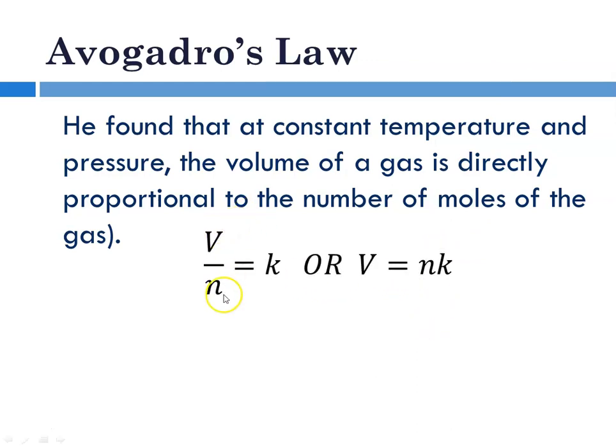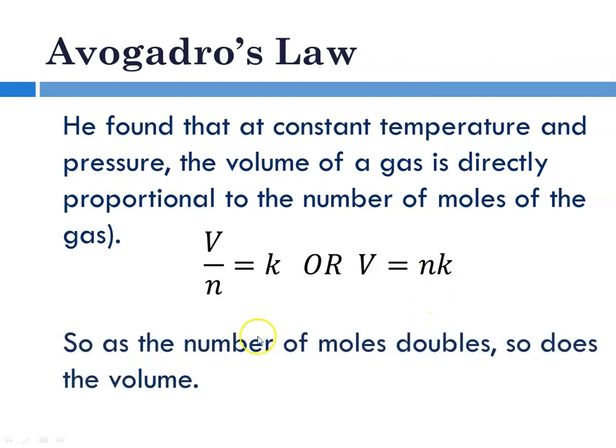So V over n is equal to a constant, or restated, V equals n times k, some constant. If you look at this equation it shows the direct relationship. So if you double n, the number of moles, volume will double. If you triple the number of moles, the volume triples.